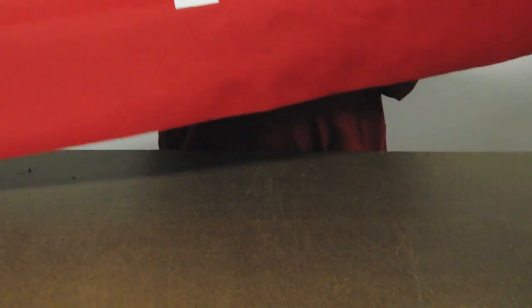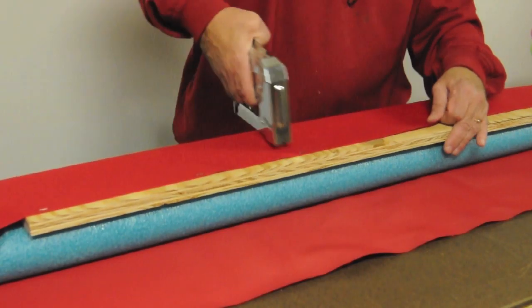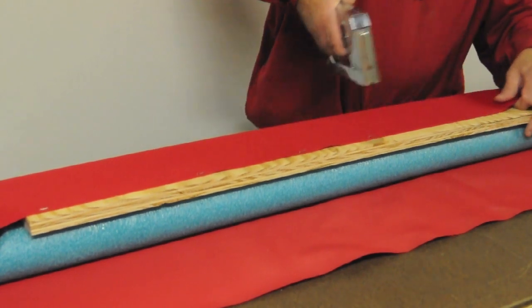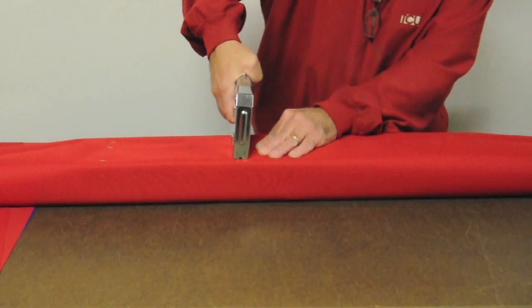Now you can easily turn the part over. Pull the material tightly over the board and use your staple gun to secure it in place. Overlap the other side of the material and staple that as well.